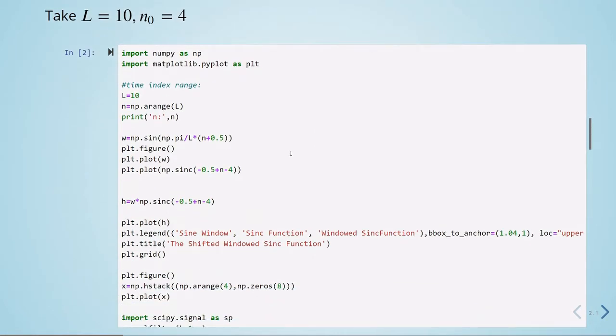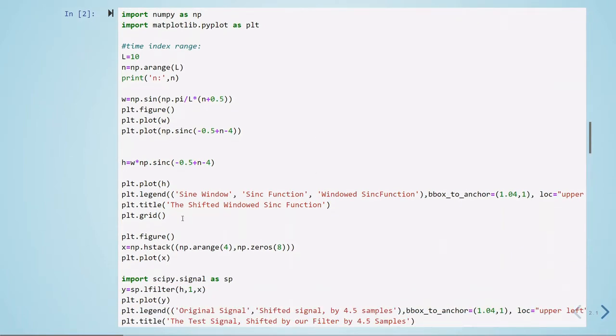And then we are applying the window, we are multiplying our window times our sinc function. And this is our resulting impulse response. And this is what we are plotting.